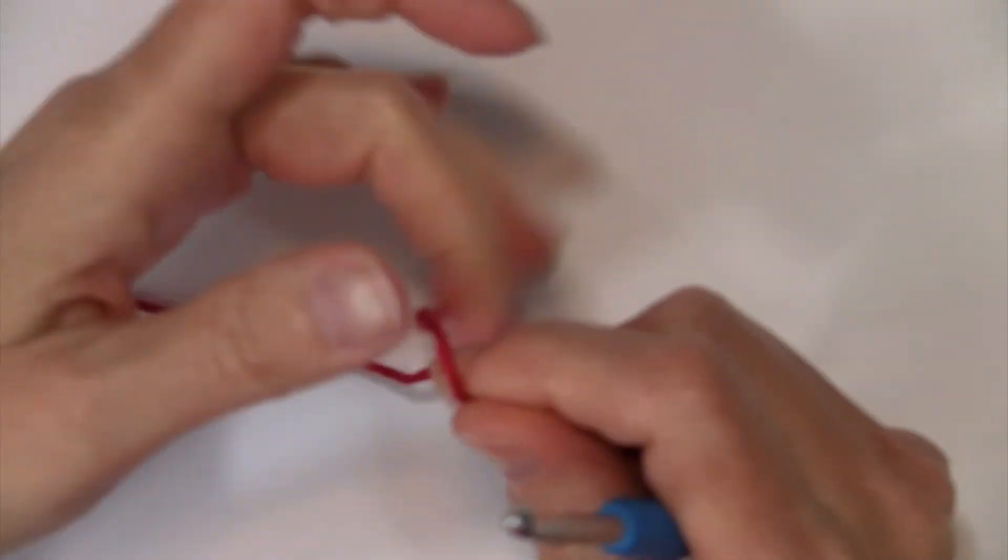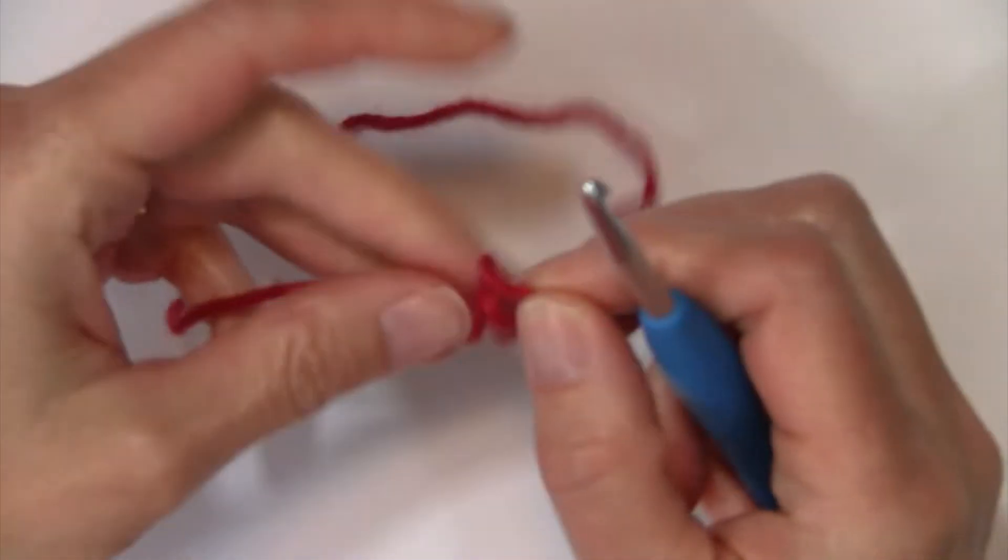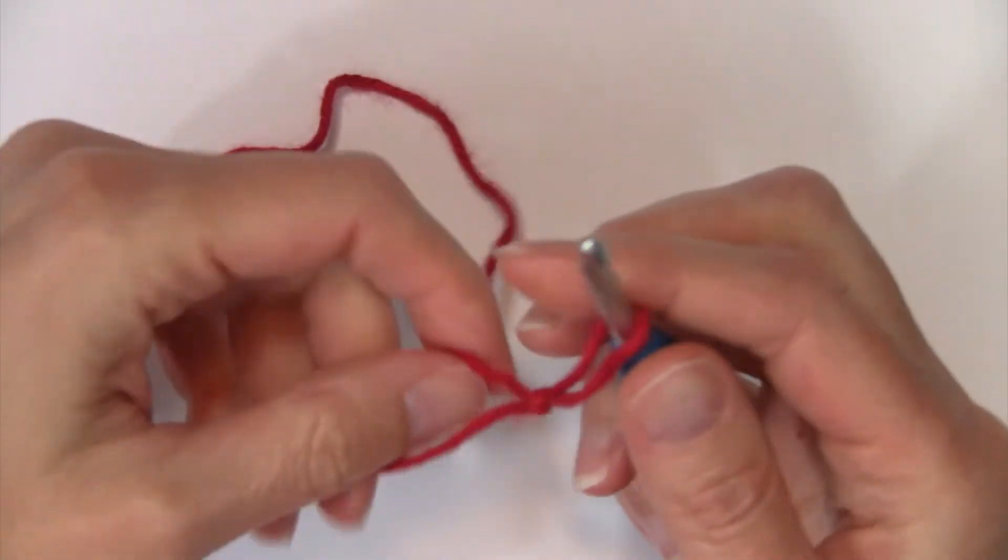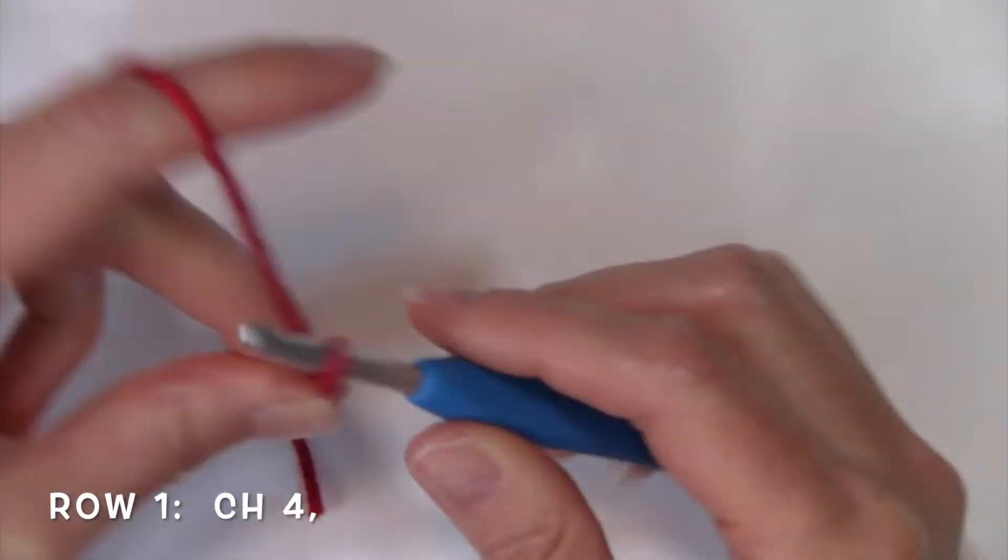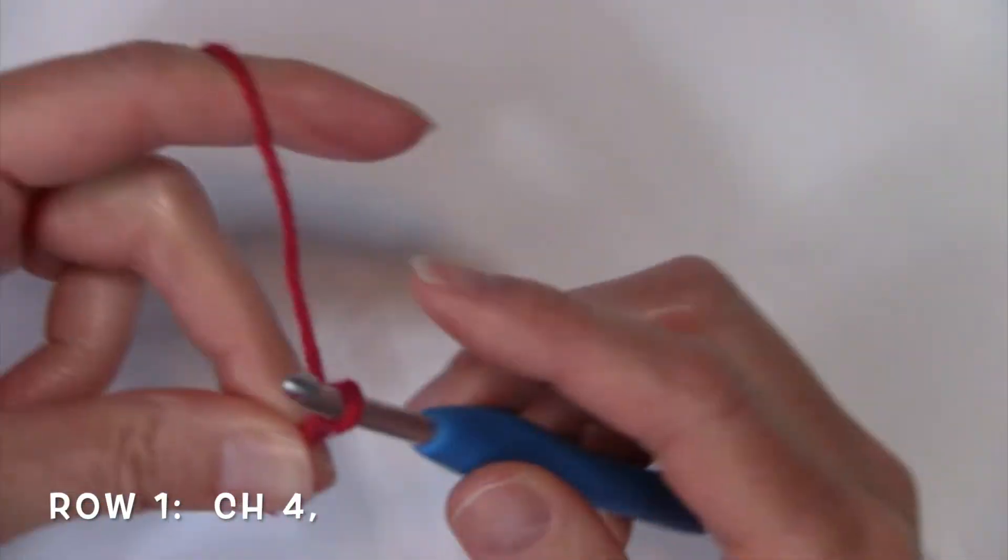To get started we're going to go ahead and get our yarn on our hook and for our first block we're going to chain four. One, two, three and four.